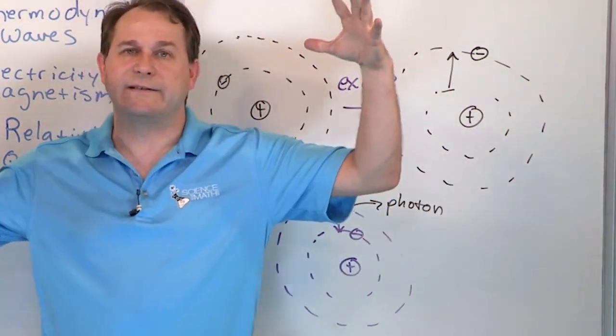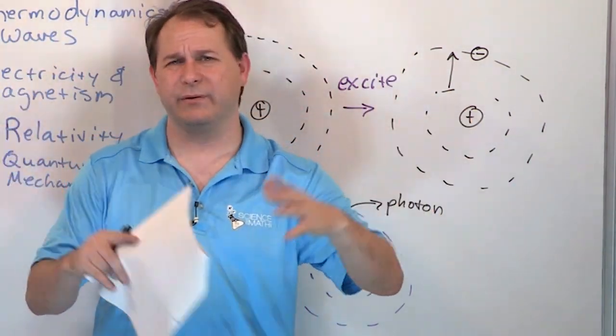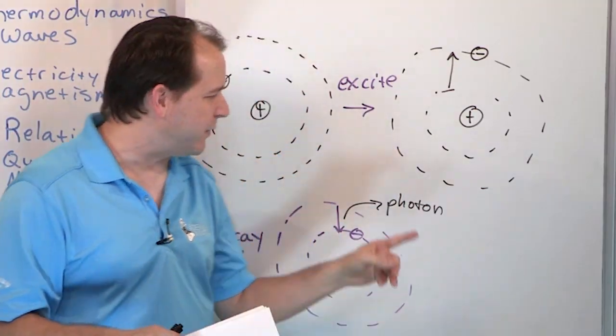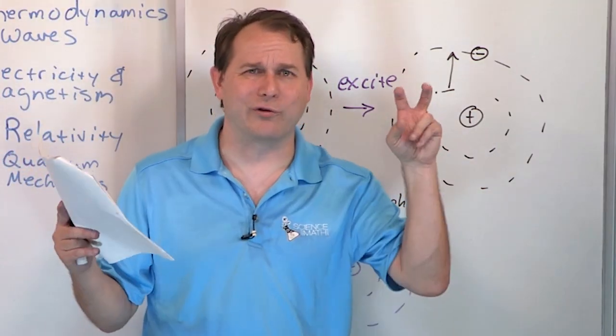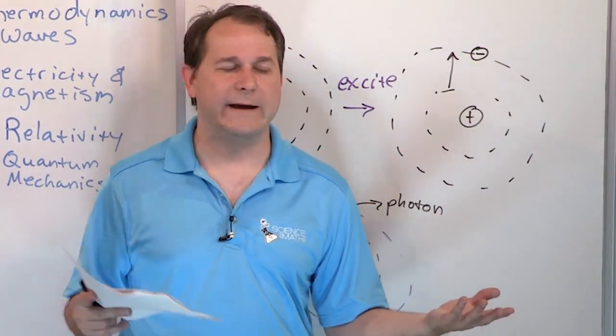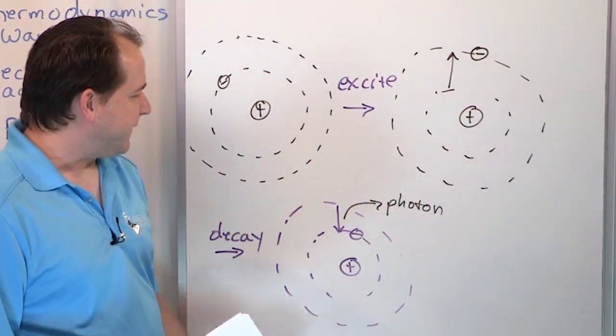There's billions and billions and billions of them, and they start decaying down. And when they do, they start releasing photons, which are light, light particles, which we already told you could be a wave or a particle, right? Why do we care about this?